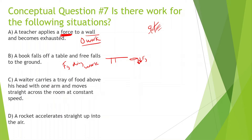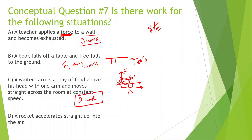Next: a waiter carries a tray of food above his head with one arm and moves straight across the room at constant speed. The food is moving to the right, however he's applying a force straight up. He's not lifting it up or going down and it's moving to the right — that's a 90 degree angle — so there's going to be zero work happening. The force is not helping it move at all.